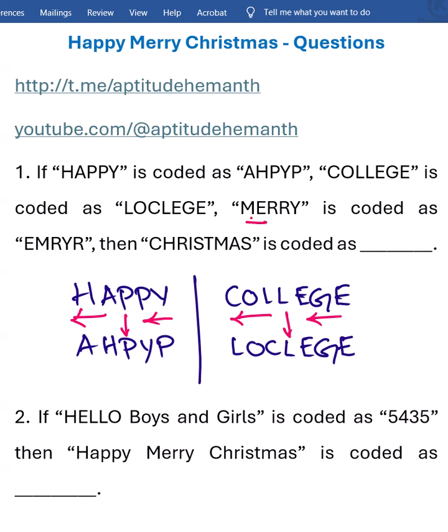So here M-E is given as E-M, R-Y is given as Y-R, and the middle letter is as it is. If that is the case, we can understand Christmas is nothing but H-C.